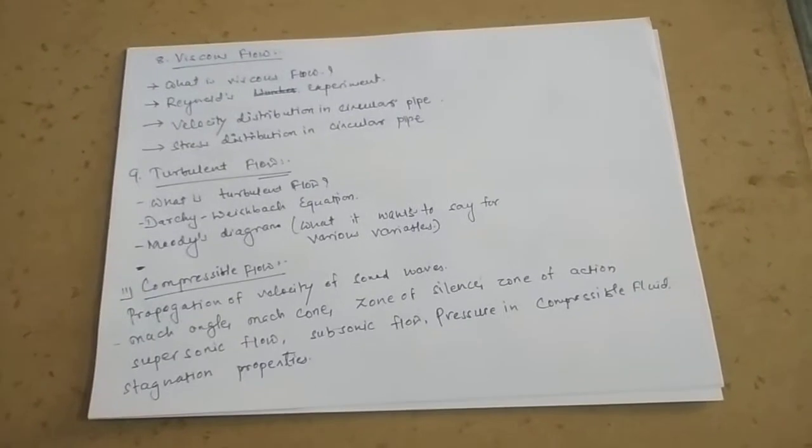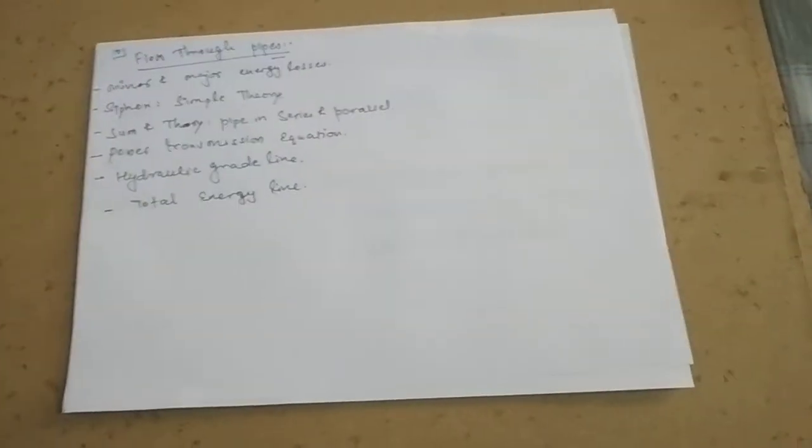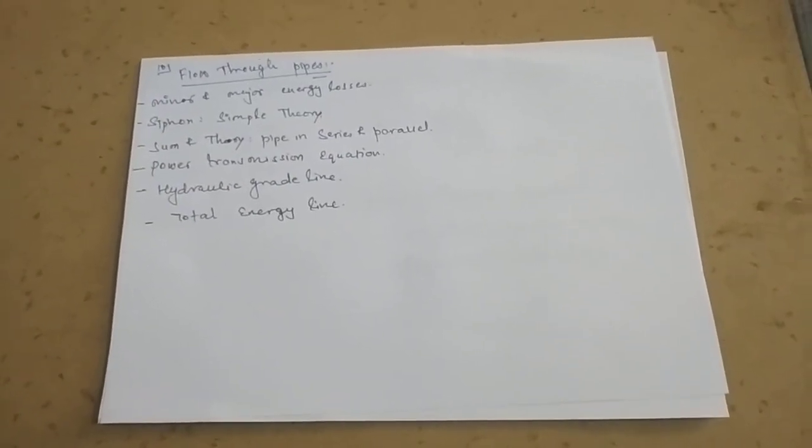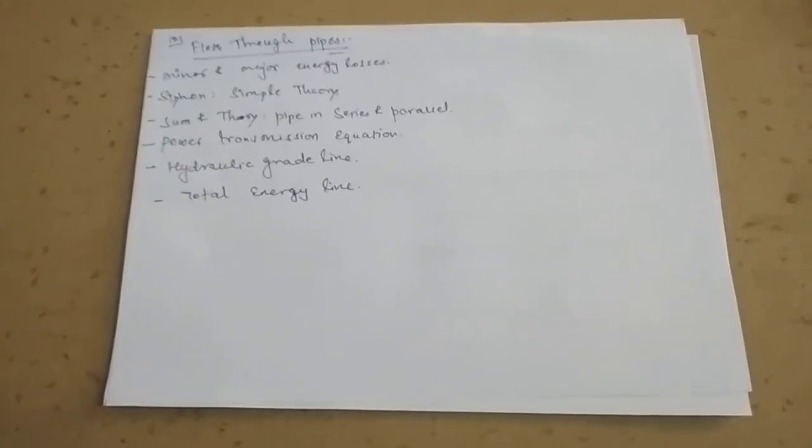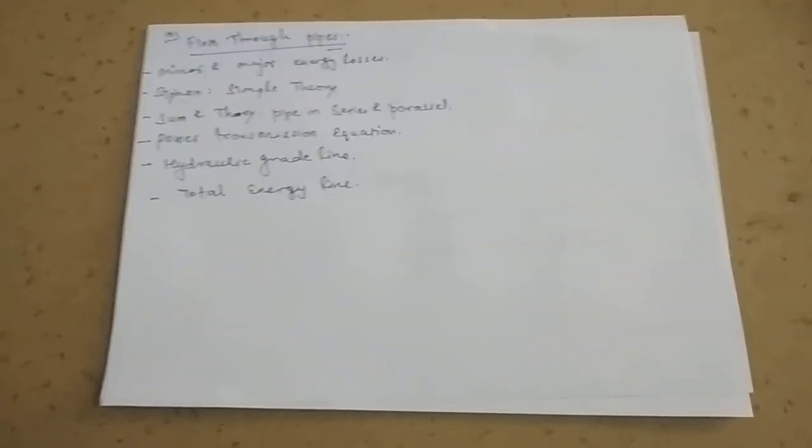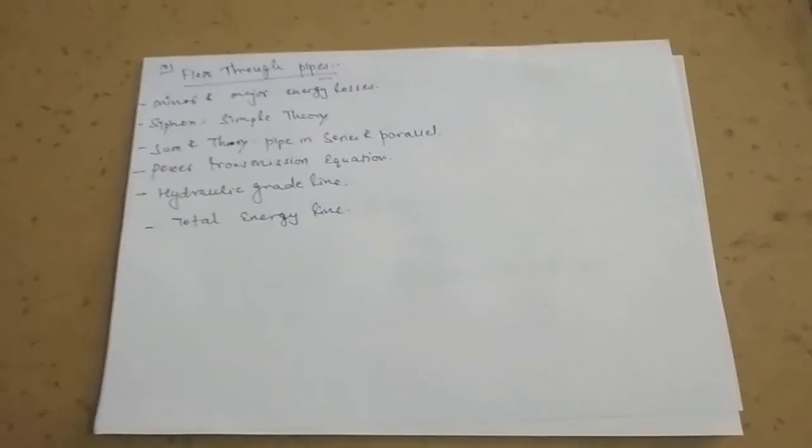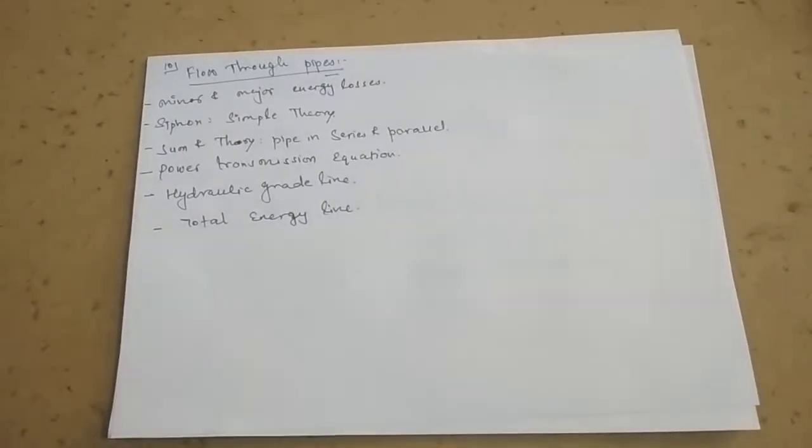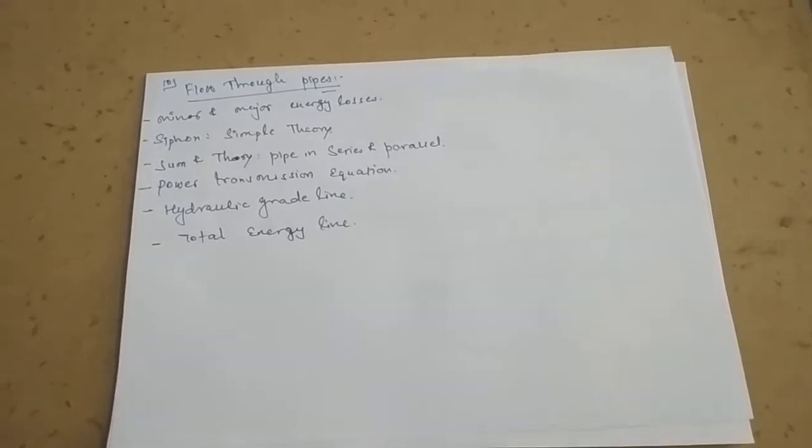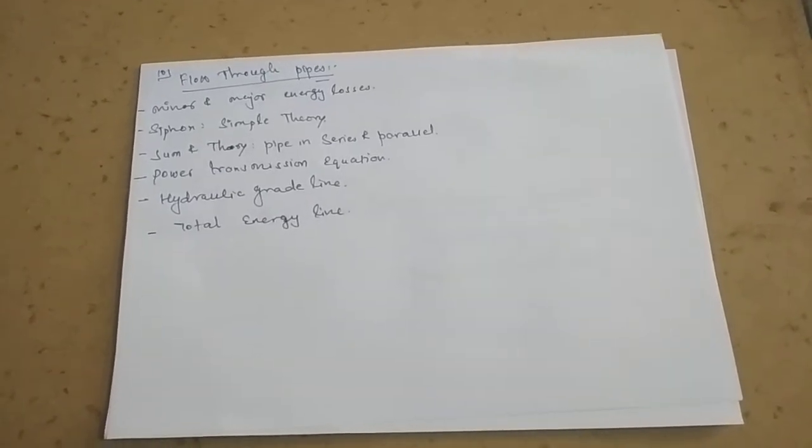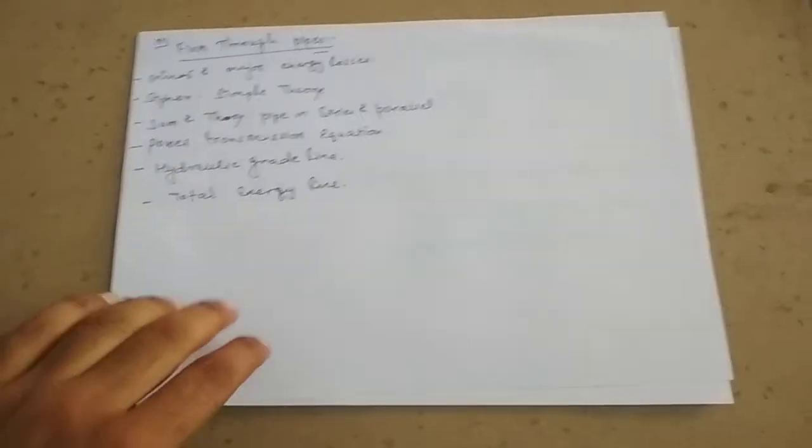10th chapter is important. For Flow Through Pipes, you can't miss any theory from this chapter. There are three or four chapters you have to do at any cost. Major and minor losses, siphon, simple theory, sum and theory for pipe in series and parallel, power transmission equations, hydraulic grade line and total energy line. Do all topics from this chapter.